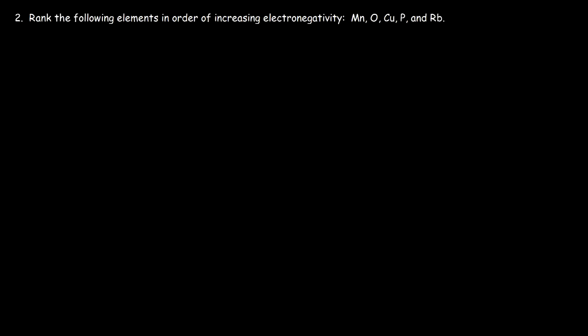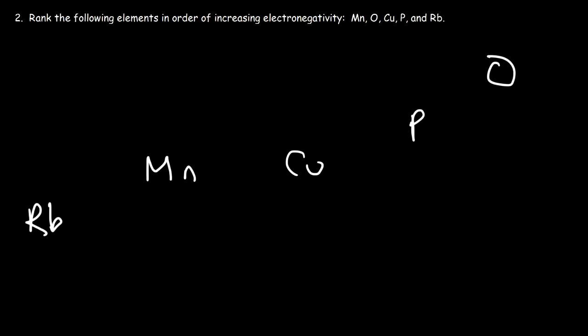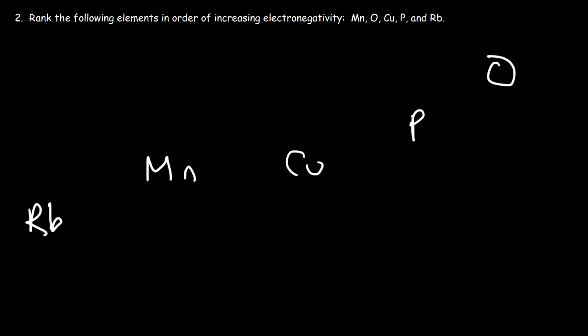Now let's move on to our second question: rank the following elements in order of increasing electronegativity — manganese, oxygen, copper, phosphorus, and rubidium. Place them in their respective positions on the periodic table. Rubidium is an alkali metal on the bottom left; manganese and copper are transition metals; phosphorus and oxygen are nonmetals. Electronegativity increases towards fluorine, so oxygen should have the highest value and rubidium the lowest. Oxygen is 3.5.